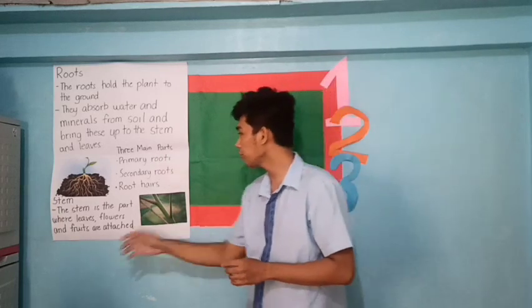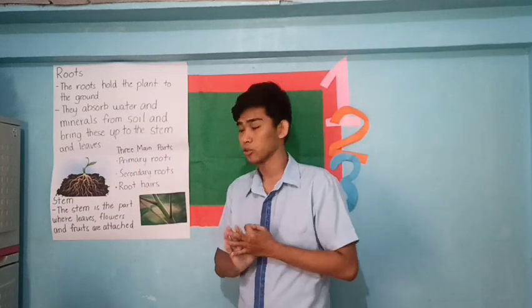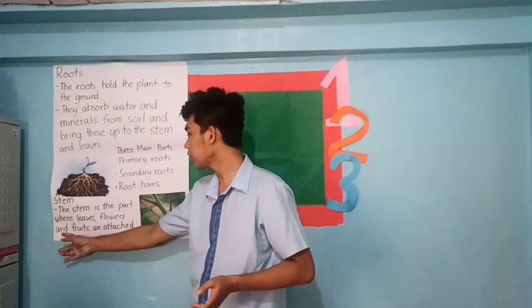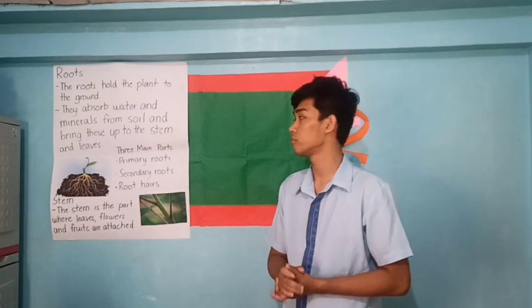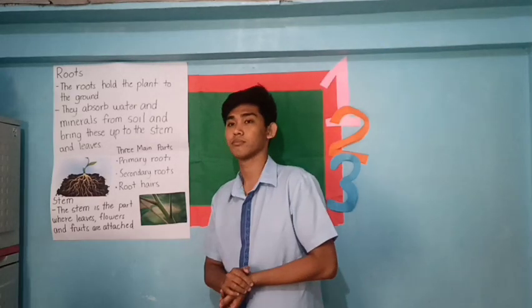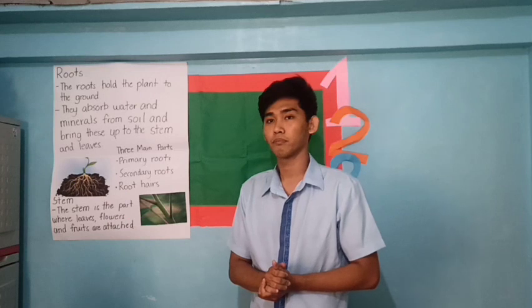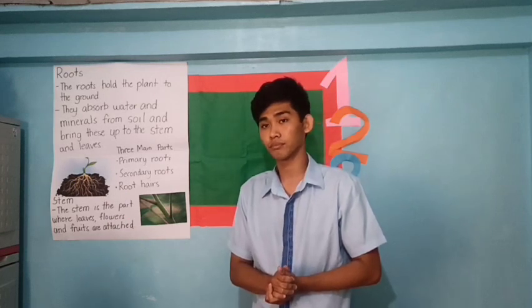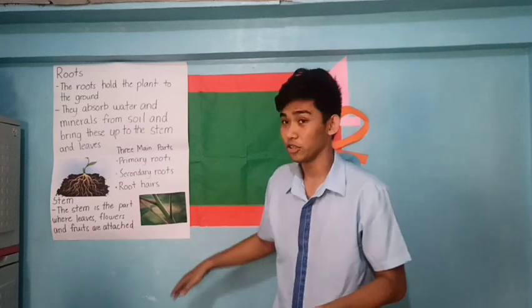There are three main parts of the roots: primary roots, secondary roots, and root hairs. The primary root is the largest root to form in a plant. The secondary roots are the small roots. And the last one, root hairs — they are very fine roots that look like pieces of strings attached to the plant.